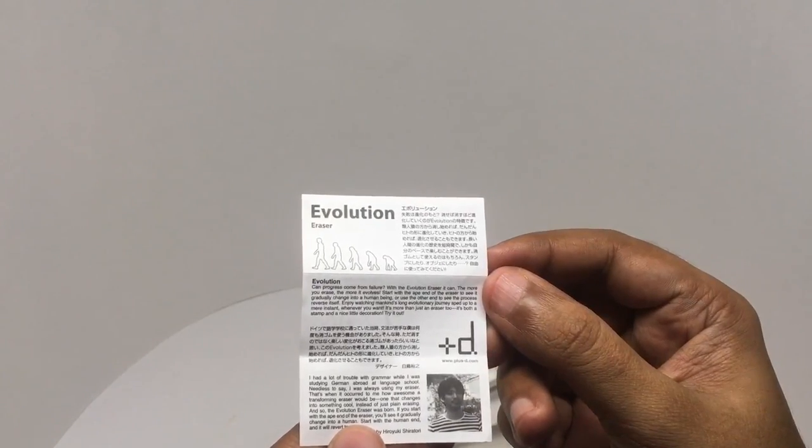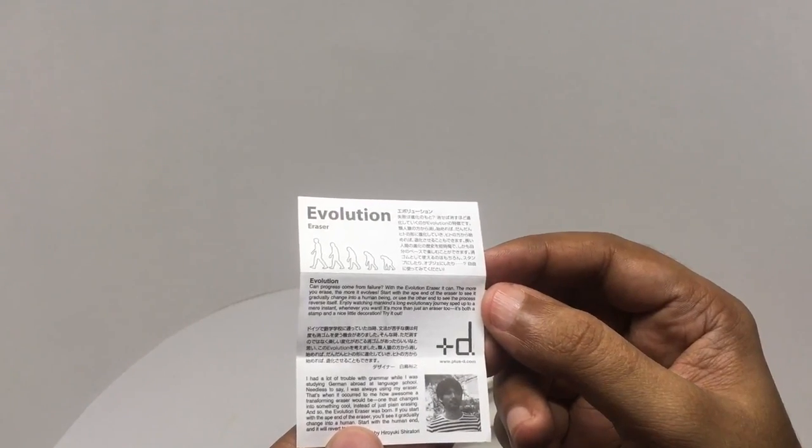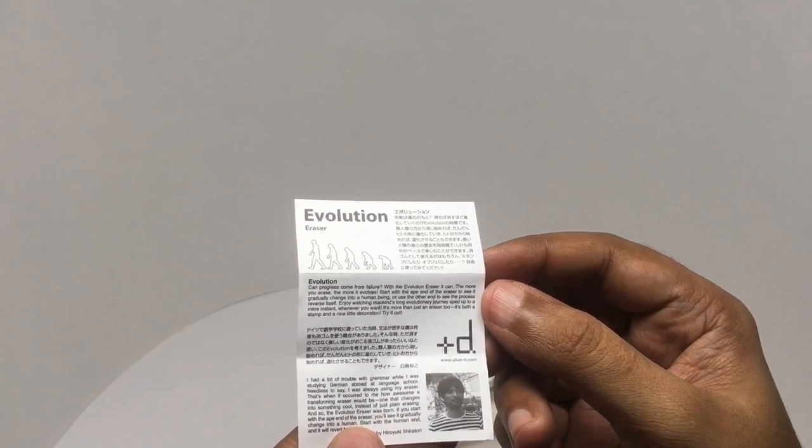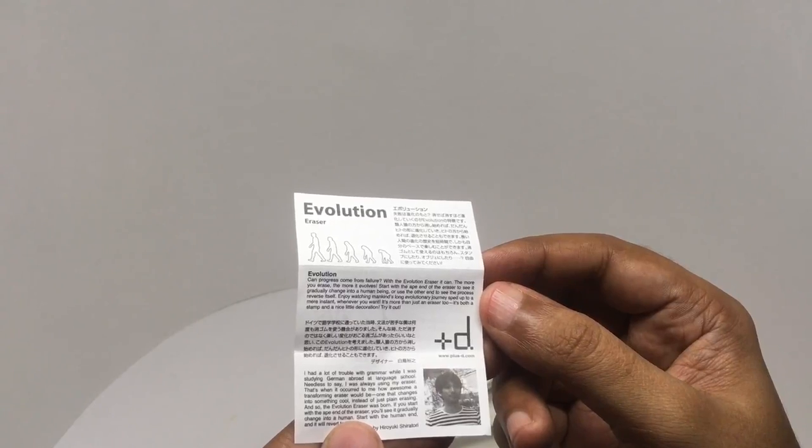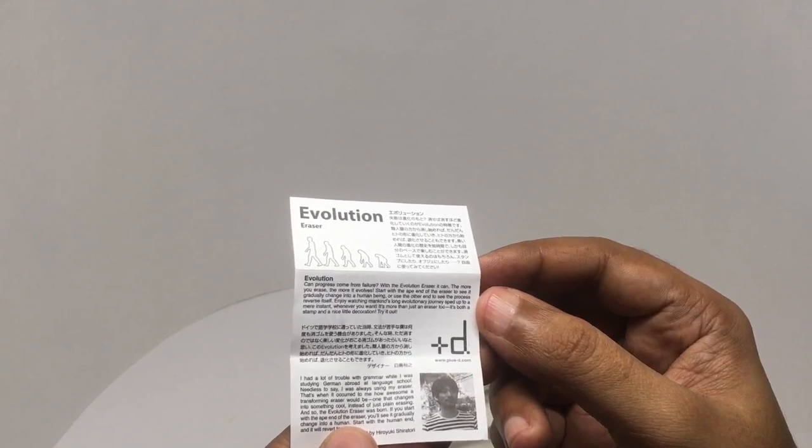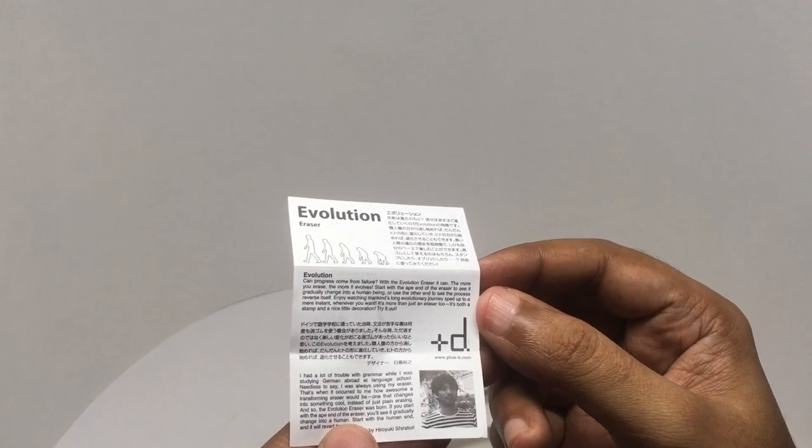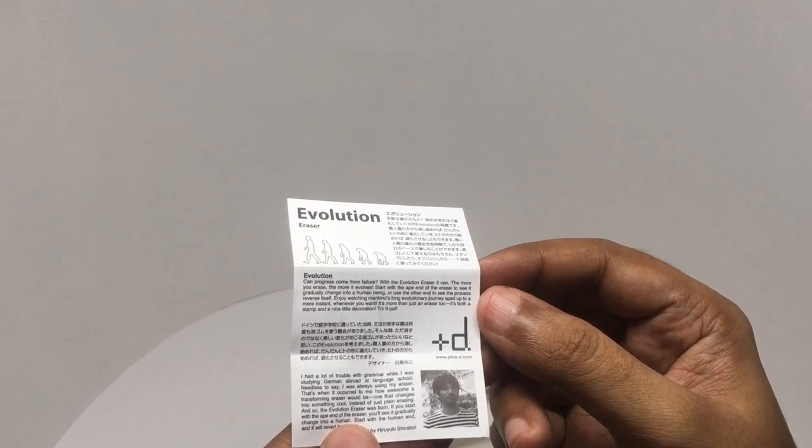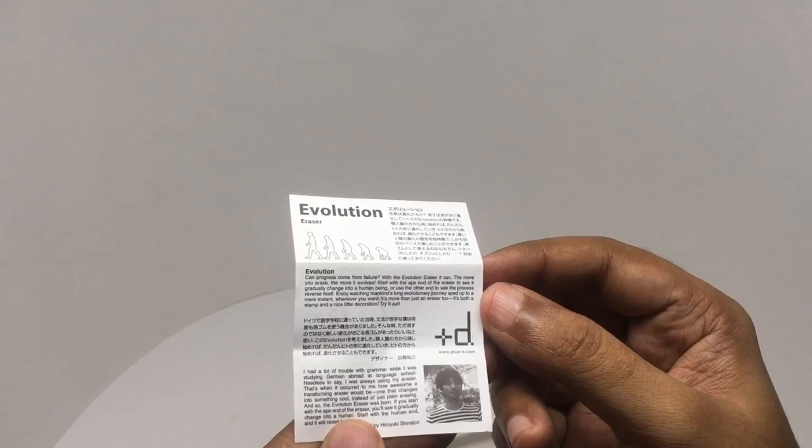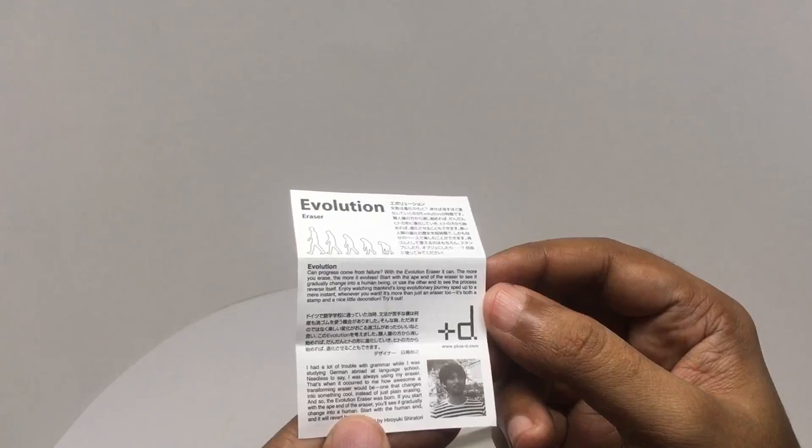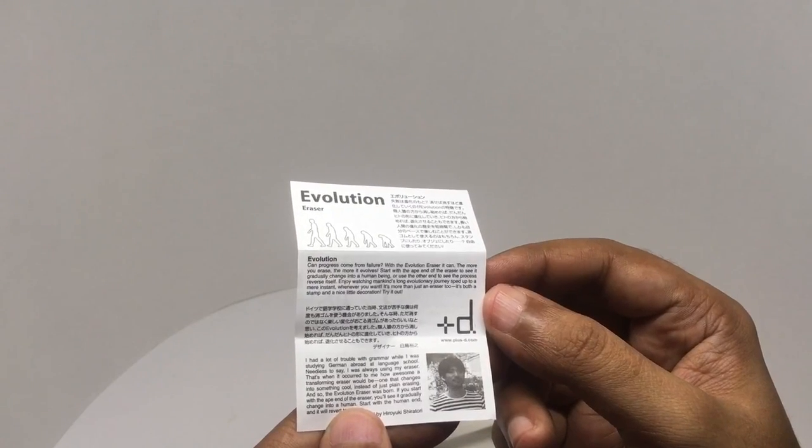Progress comes from failure. With Evolution eraser, the more you erase, the more it evolves. Start with one end of the eraser to see it gradually change into a human being, or use the other end to see the process reverse itself. Enjoy watching mankind's long evolution journey speed up to a mere instant whenever you want.